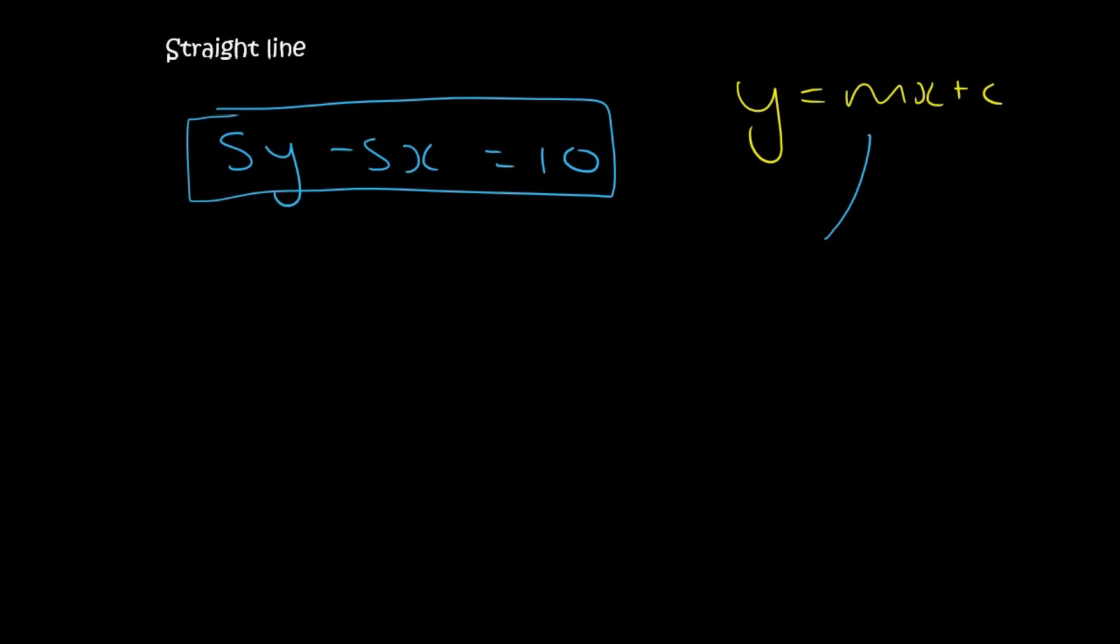So what we would do is you would get the y by itself on the left and take everything else over, so it would become 10 plus 5x. Then you would need to get y alone, so you'd have to divide by 5, but then you must divide everything by 5. And so that cancels, and so you have y is equal to 10 divided by 5 is 2, and this 5 divided by 5 is x.